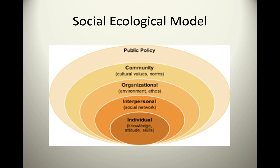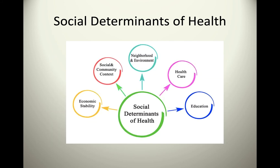With that in mind, you can see how the socio-ecological model can impact someone's ability to do primary, secondary, and tertiary prevention. An individual's knowledge, their social networks, the environment, the community they live in, and public policies all impact what we call the social determinants of health, which in turn impact primary, secondary, and tertiary prevention. These social determinants include economic stability.